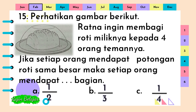Perhatikan gambar berikut. Ratna ingin membagi roti miliknya kepada empat orang temannya. Jika setiap orang mendapat potongan roti sama besar, maka setiap orang mendapat titik-titik-titik bagian. A. Satu per dua. B. Satu per tiga. C. Satu per empat. Jawaban yang benar adalah C. Satu per empat.